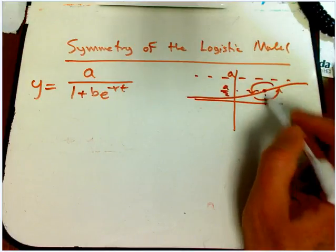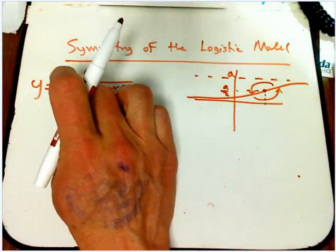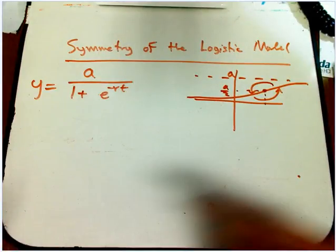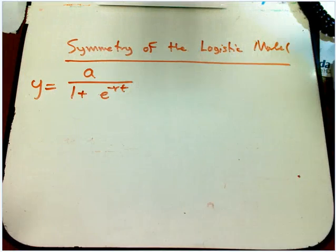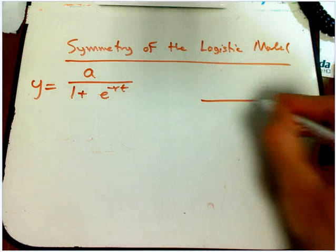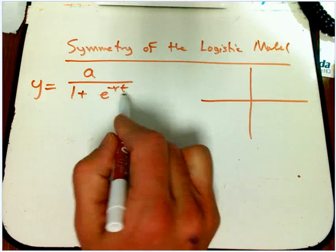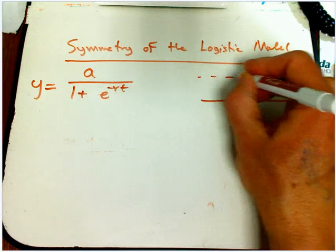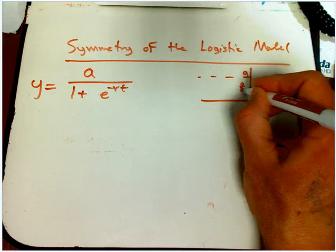But it's just a little bit more complicated to do that. So what I'm going to do is I'm going to set b equals 1, and show it in that case. And the nice thing about that is that in that case, what's the halfway point when t equals 0, a over 1 plus 1, a over 2, that's right on the y-axis. So here's a, here's a over 2.